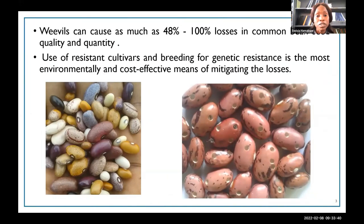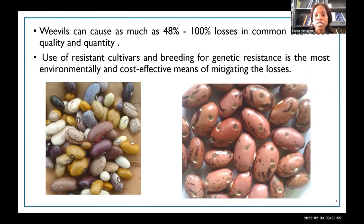Common bean weevil can cause as much as 48 to 100 percent losses in common bean seed quality and quantity, depending on the susceptibility of the cultivar. The weevils attack both in the field as well as in storage. Hence it's imperative to use resistant cultivars — breeding for genetic resistance is the most environmentally and cost-effective means to mitigate the losses. The image shown displays beans that have been attacked by weevils, illustrating the damage a susceptible variety can suffer.